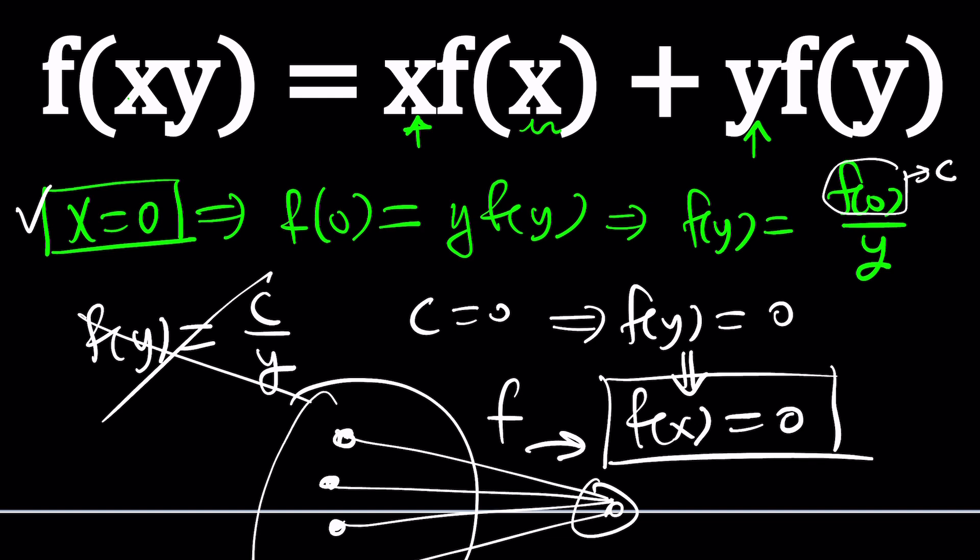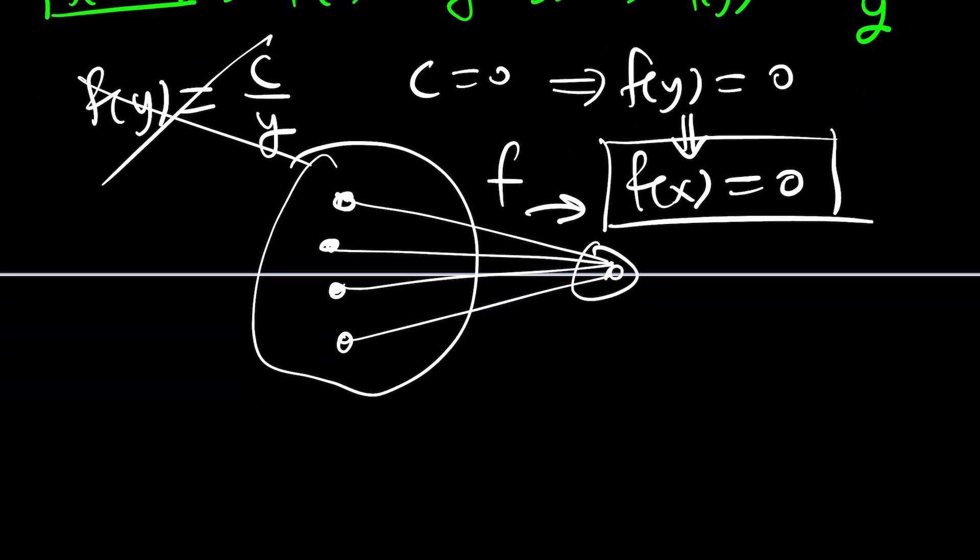So how do we go about it? Well, first of all, if y is zero, I mean, if x is zero, sorry about that, you get y equals zero. So we basically got the following, right? yf of y is zero. Now, here's the thing.